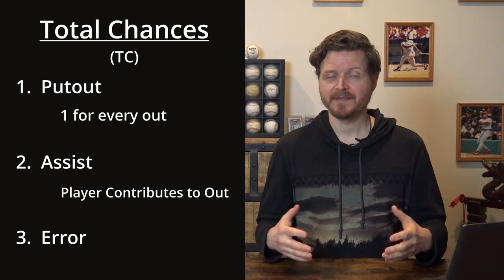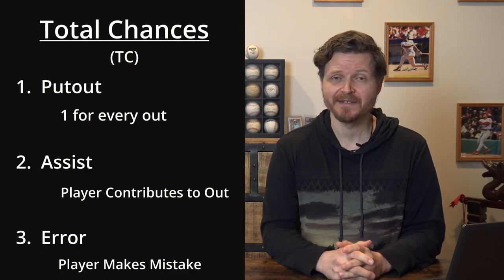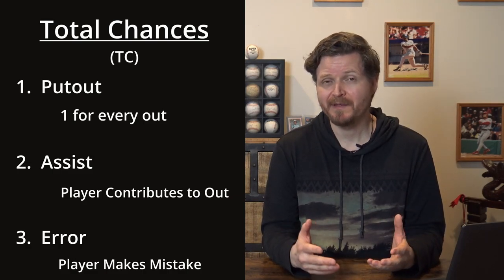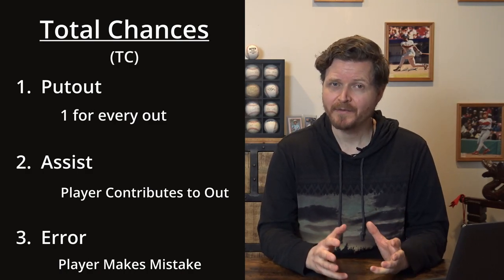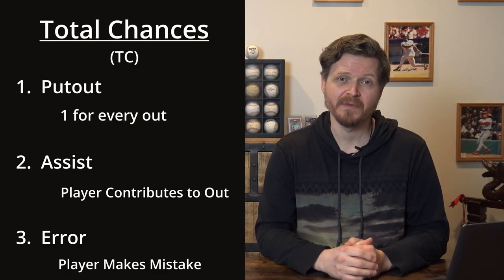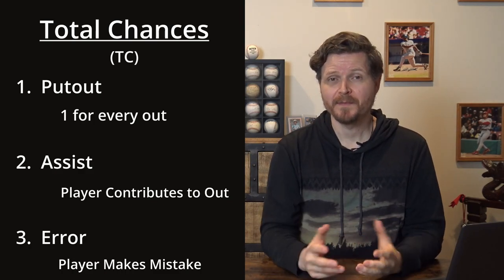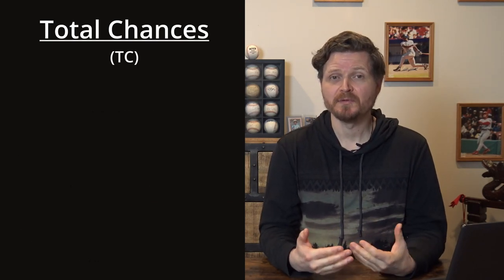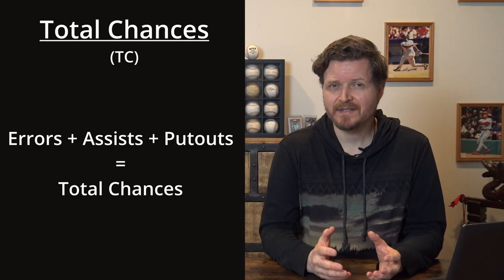The third bucket is an error — when a player should have been able to make a play but could not execute it. This includes dropped fly balls, bobbled ground balls, throws way offline, or a catcher failing to catch a third strike. Errors are only counted on plays the official scorer determines an average player should make; a very difficult play that isn't converted would not be counted as an error, and therefore also not as a chance.